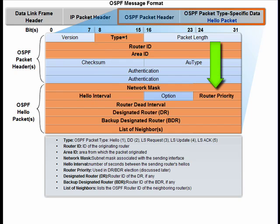Information about which router is in an area, which is a designated router, and which is the backup designated router is included in the packet, as is a list of the router IDs of neighboring routers. If at this point you are suspecting this is a dense chapter, you are correct. Make sure you plan enough time to absorb the information and practice the labs and activities.